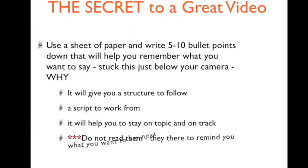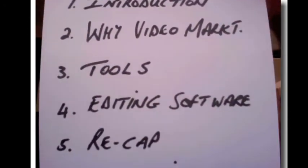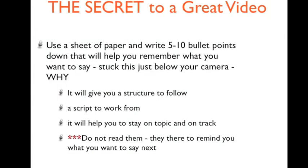Here's a secret I want to share with you. One of the most important things is to use a sheet of paper — write five to ten bullet points down that will help you remember what you want to say. You take this paper of bullet points and stick it beneath your camera so that it's in front of you and you can see it. It will give you a structure to follow, a script to work from, and it will help you stay on topic and on track. Do not read them — they are there to remind you what you want to say next.